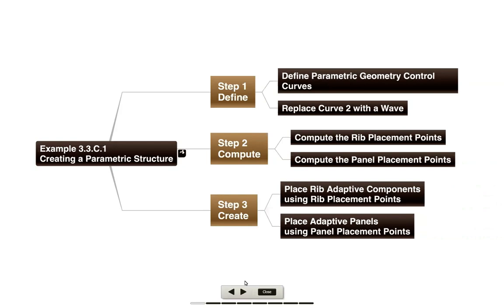So we'll start by basically defining some geometric control curves. We'll replace one of those curves with a little bit of a sine wave. Then compute some rib and panel placement points and finally place some rib and panel components.